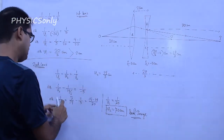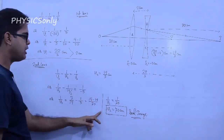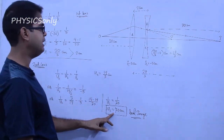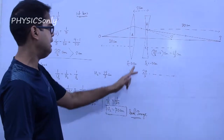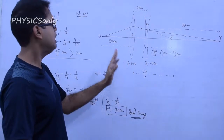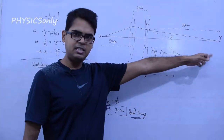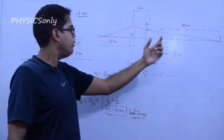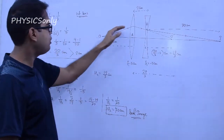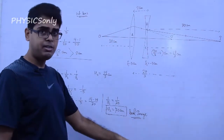We have calculated that the final image distance V2 is 70 cm. Even though the concave lens is a diverging lens, in this configuration with a virtual object, it produces a real image.